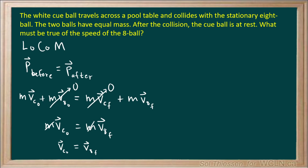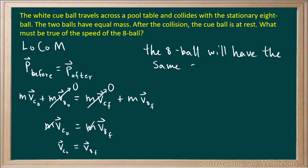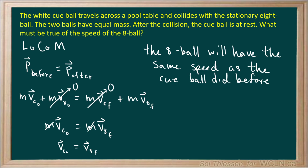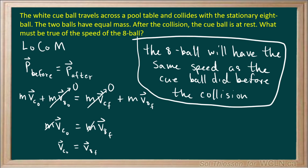The speed of the eight ball — the magnitude of its velocity after the collision — will be the same as the speed of the cue ball before the collision. The eight ball will have the same speed as the cue ball did before the collision. That's the answer to this problem.